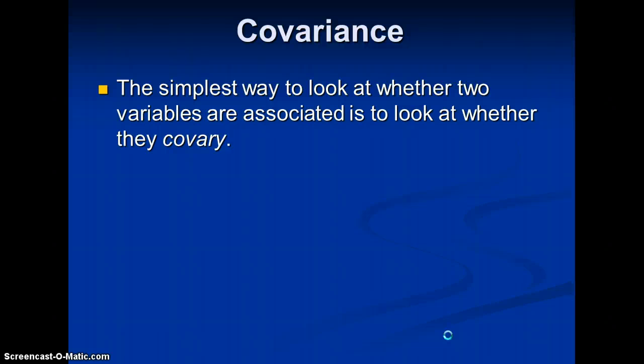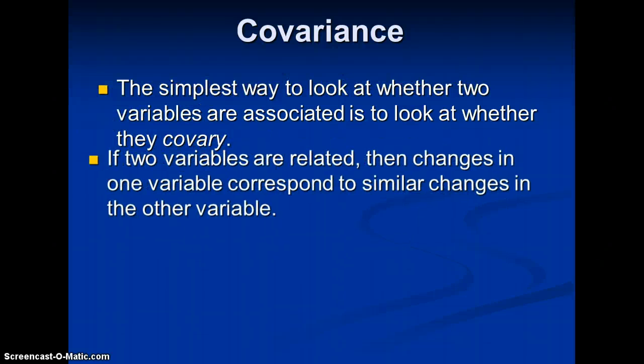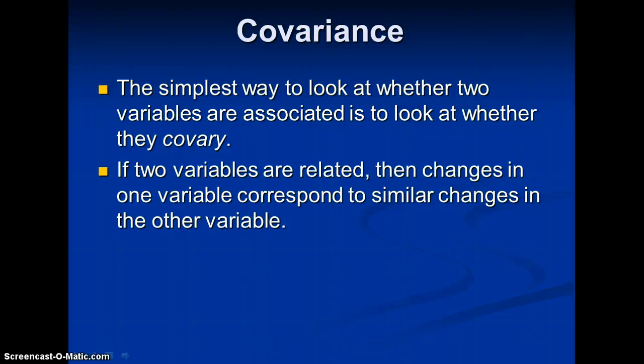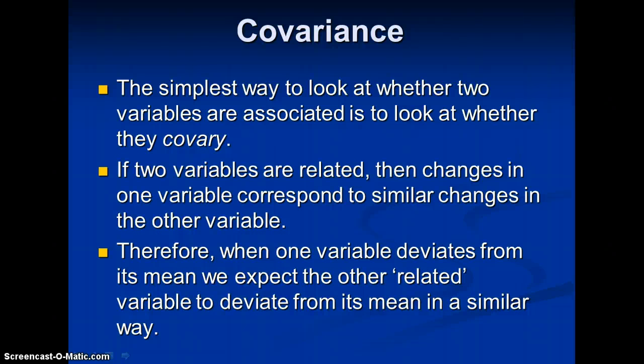So covariance is the simplest way to look at whether two variables are associated — we just want to look at whether or not they co-vary. If two variables are related, changes in one variable correspond to similar changes in the other variable. Therefore, when one variable deviates from its mean, we expect the other related variable to deviate from its mean in a similar way, as demonstrated by the scatter plots with fitted lines for positive and negative associations.